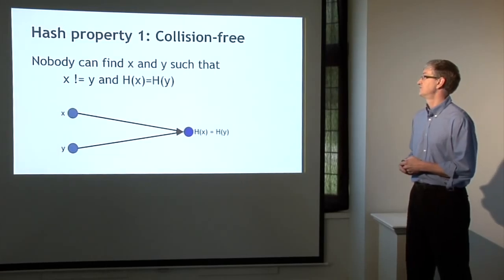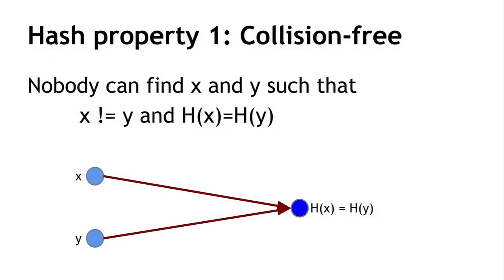The first property is collision-free. What that means is that it's impossible — nobody can find values x and y such that x and y are different and yet the hash of x equals the hash of y. If we look at the operation of the function, here's x and h(x), and here's y and h(y); nobody can find a situation where x and y are separate and yet hash to the same value.